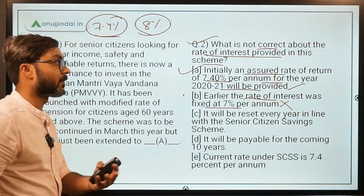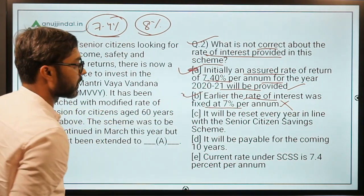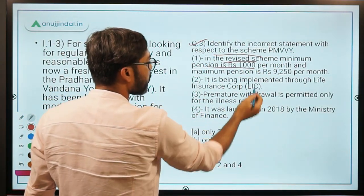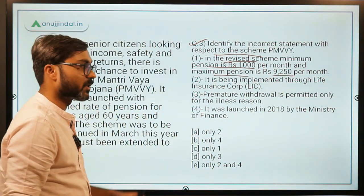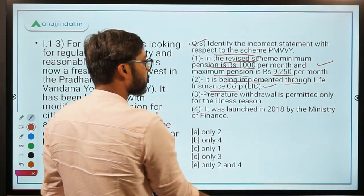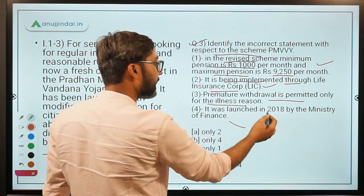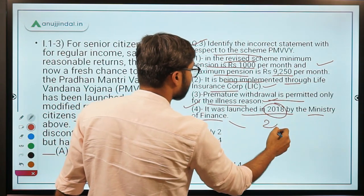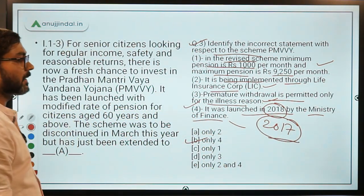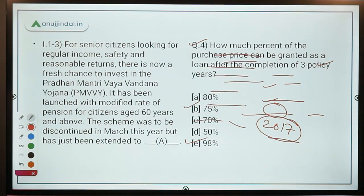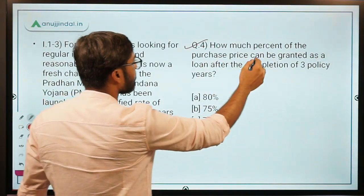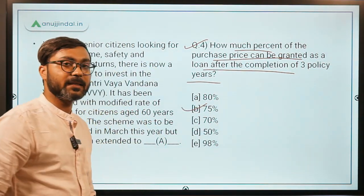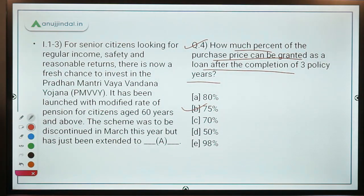Question three asks to identify the incorrect statement. Minimum pension of 1000 rupees and maximum of 9250 is correct. Implementation through LIC is correct. Premature withdrawal only for illness reasons is correct. The statement that it was launched in 2018 is incorrect — it was launched in 2017. So option B (statement 4) is the incorrect one. Question five asks how much of the purchase price can be granted as a loan after three policy years — the answer is 75 percent.